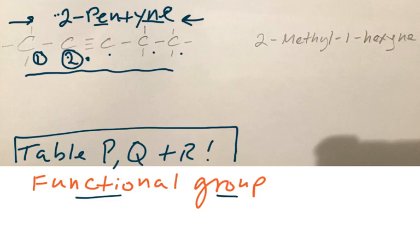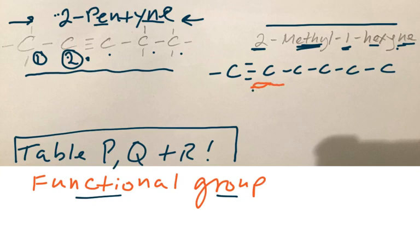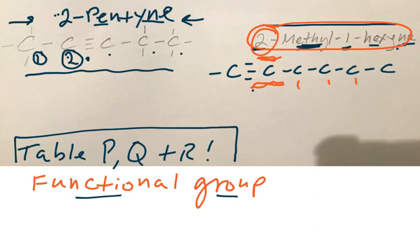Now guys, I was looking at this guy and I made a mistake. Hex has six carbons. Y-N means triple bond, so we put a triple bond at carbon number one. But I put two methyl here — I cannot put anything else on carbon number two, so there's no such thing as 2-methyl-1-hexyne. This name is a violation, so you're not responsible for that.